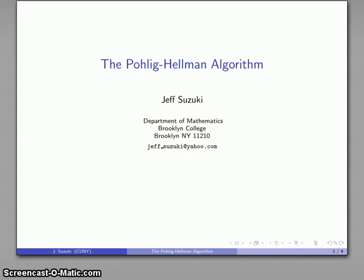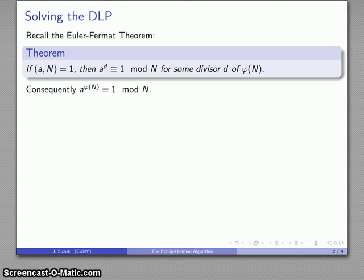The ability to solve the Chinese remainder problem leads to a method of solving the discrete logarithm problem that's known as the Pohlig-Hellman algorithm. And the basis of it is the following.